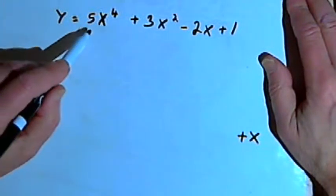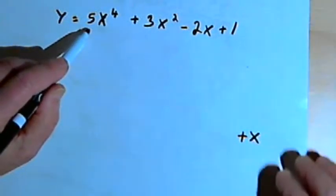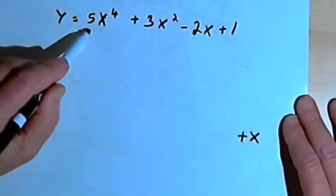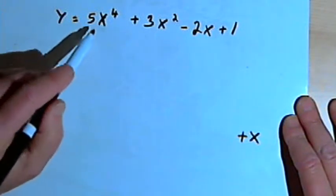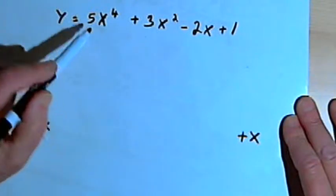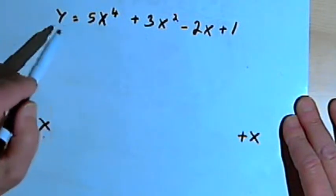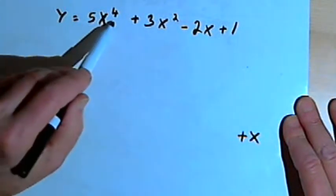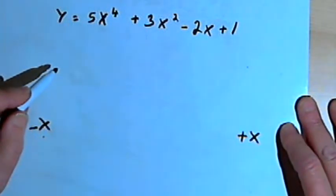The coefficient — the 5 — which we call the lead coefficient, is a positive number. If I have a positive lead coefficient and a polynomial with an even degree, here's what's going to happen for the end behavior.